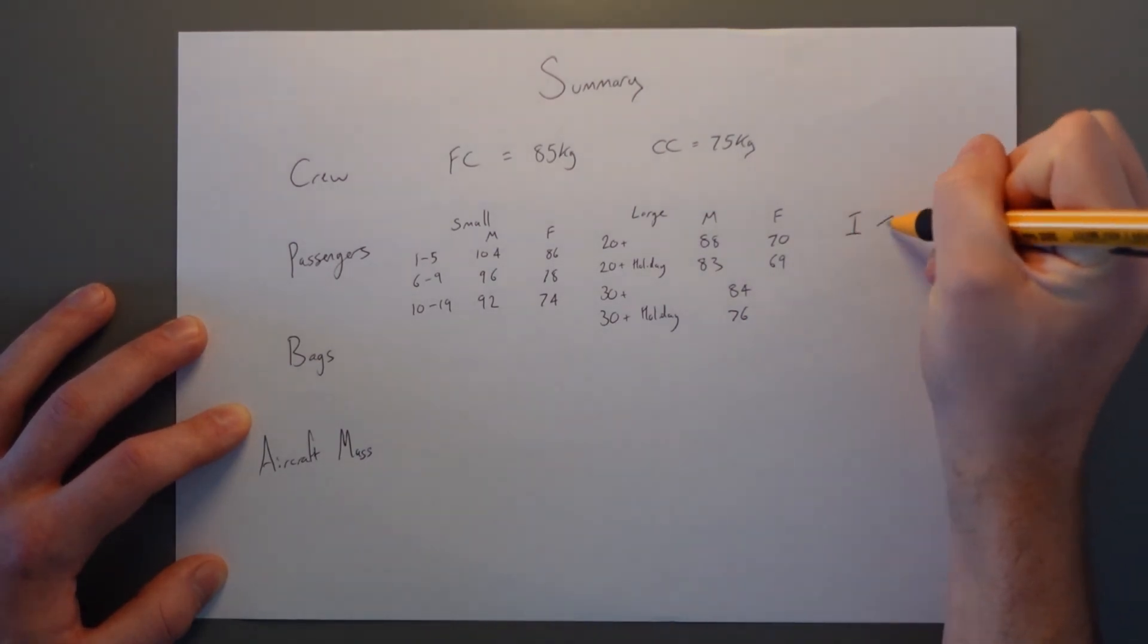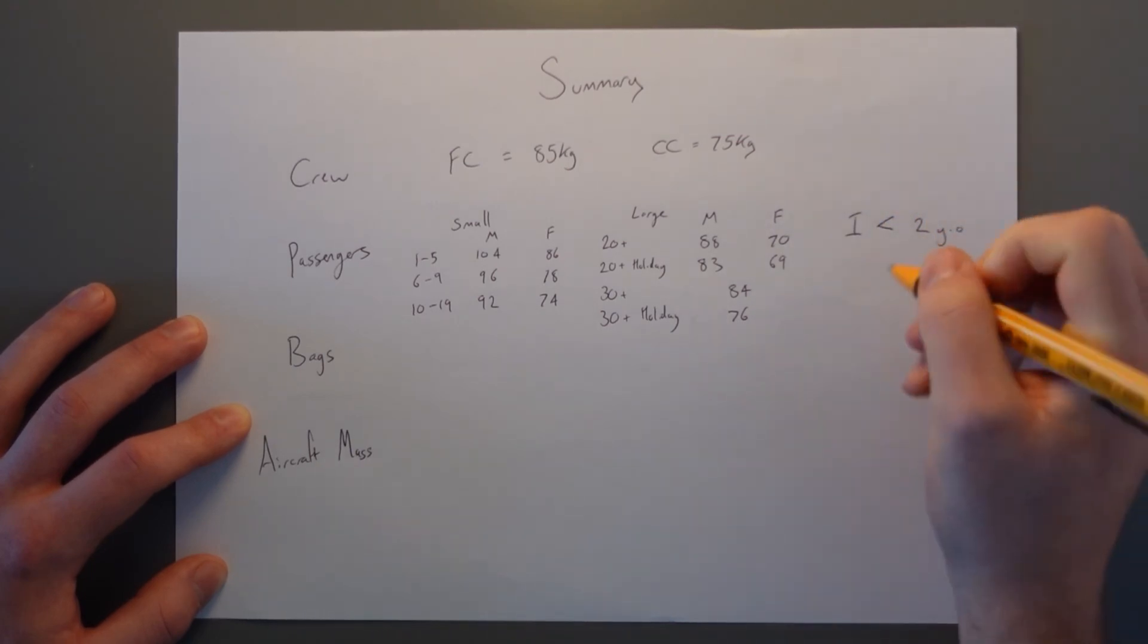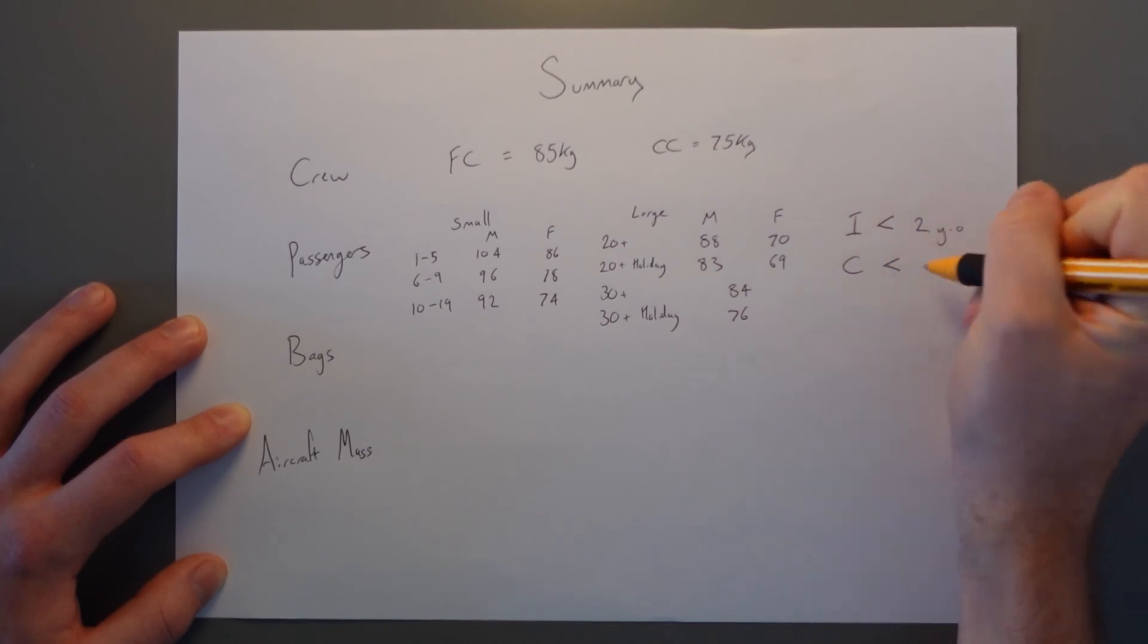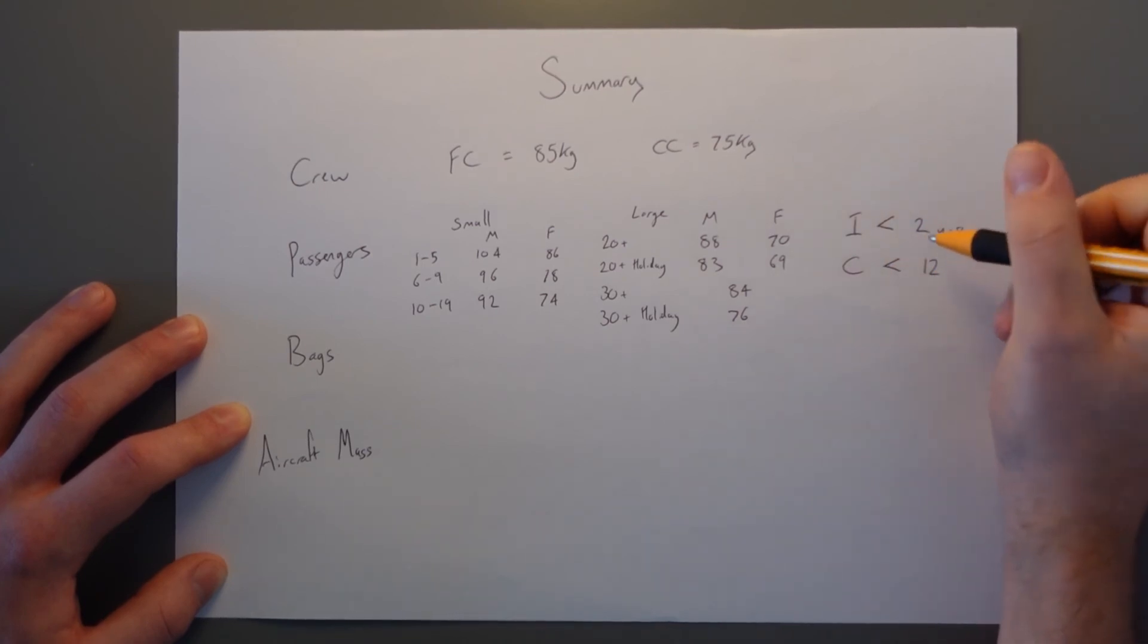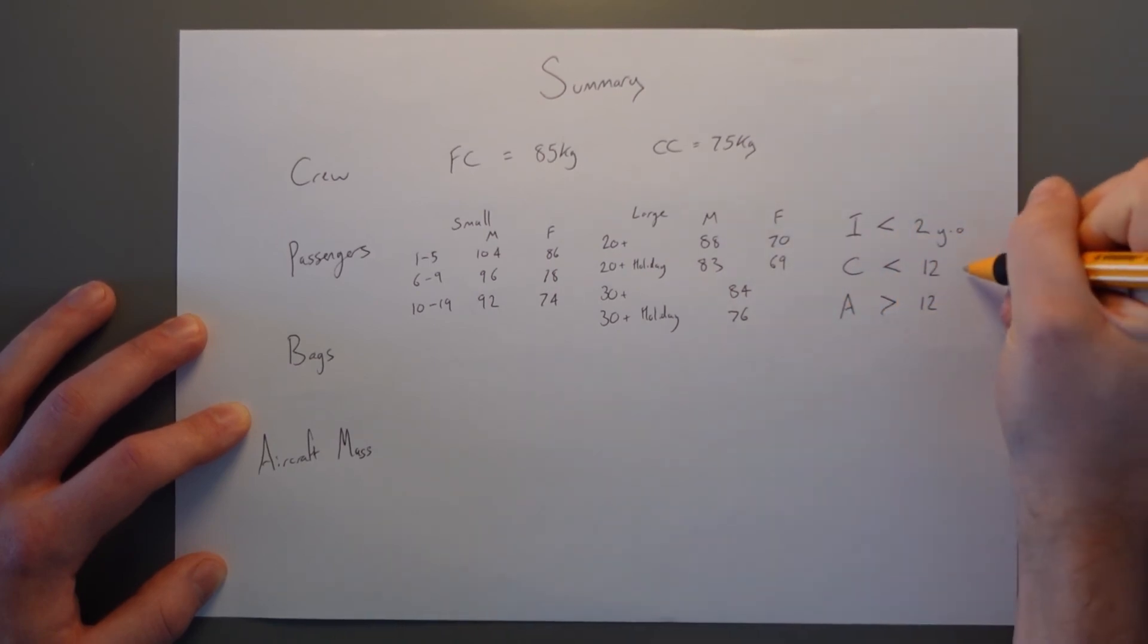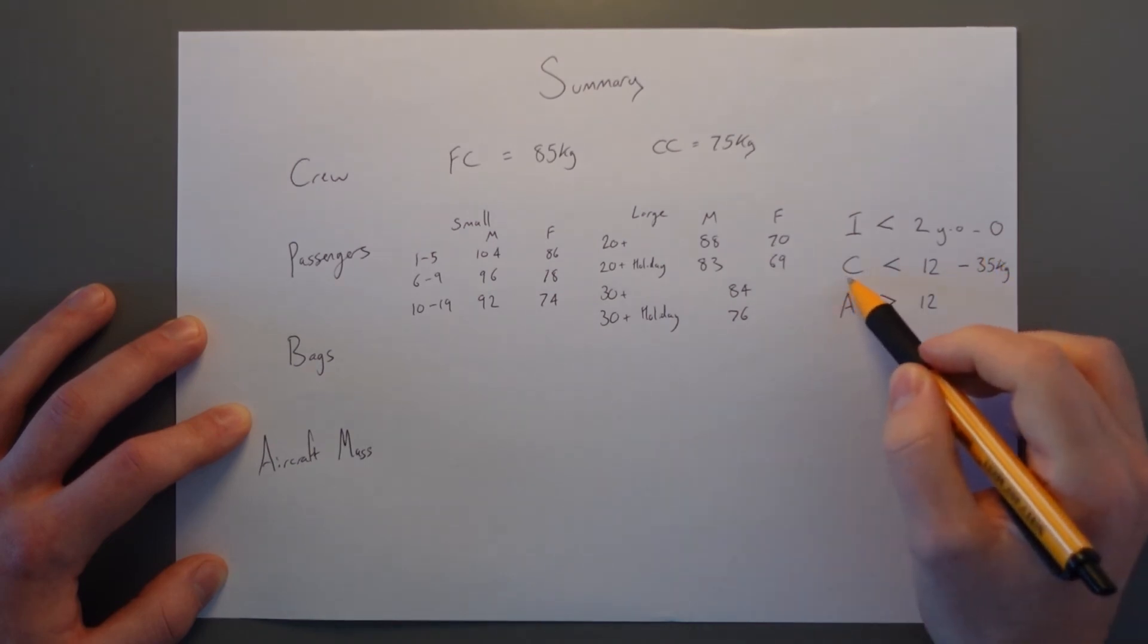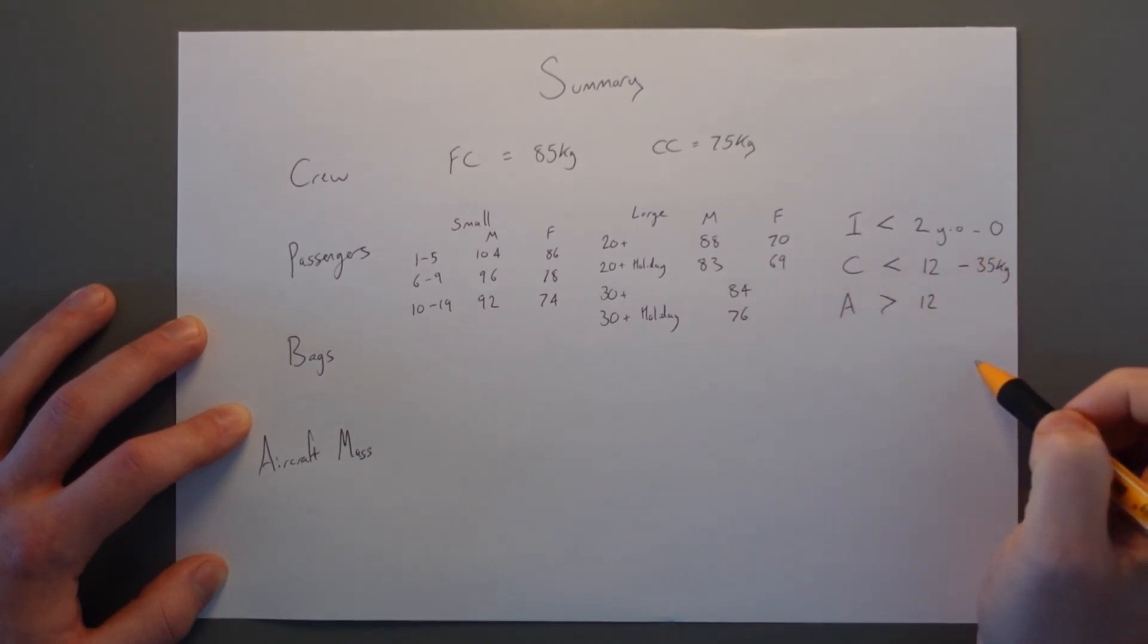In terms of the age breakdown, we have infants as being younger than two years old. We have children who are younger than 12, but obviously older than two years old as well. And then we have adults who are older than 12. Children are considered to weigh 35 kilograms and an infant is zero kilograms because they're sitting on an adult's lap. Unless they are sat on their own, then they're considered a child and weigh 35 kilograms.